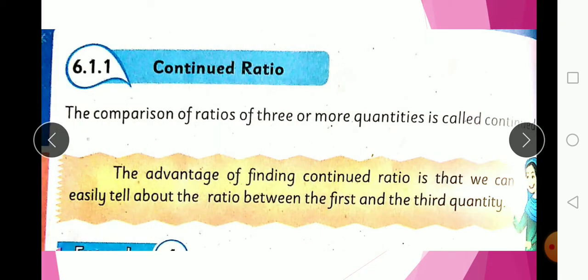A comparison of the ratios of three or more quantities is called a continued ratio. The advantage of finding a continued ratio is that we can easily tell about the ratio between the first and third quantity. Now, when you have more than two quantities, you compare them using continued ratio.